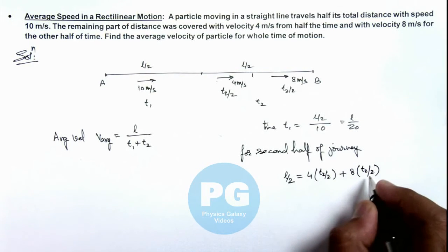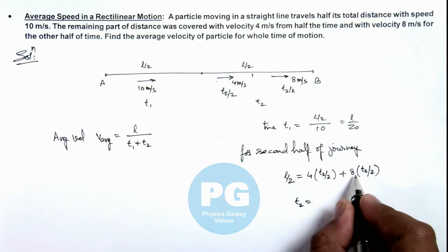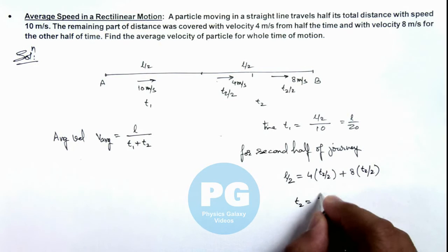So on simplifying, we are getting the value of t2 is equal to, this is 2 plus 4, this is 6, so this is L by 12.